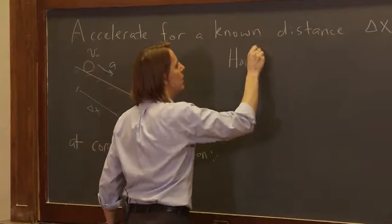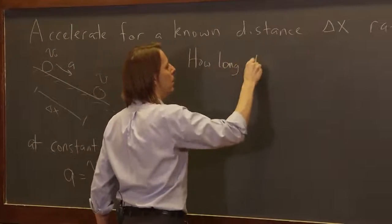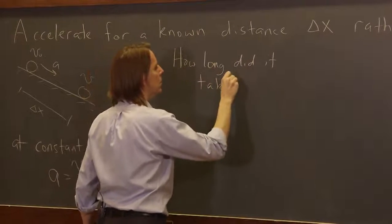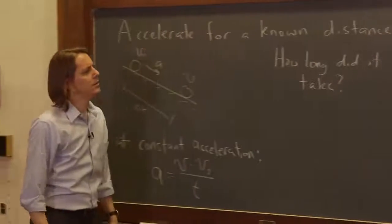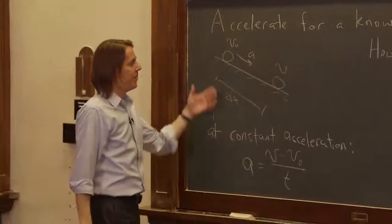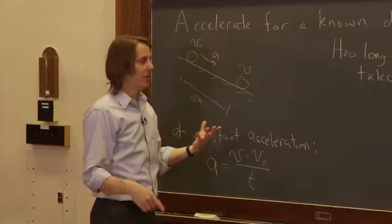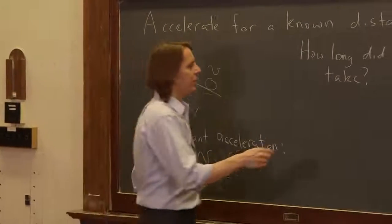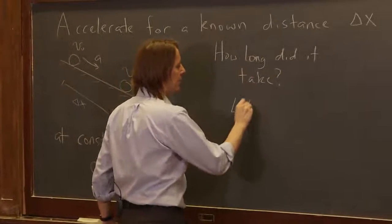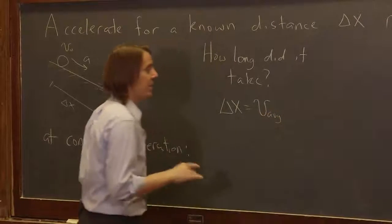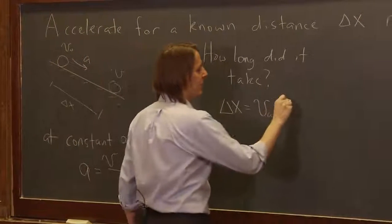So we've got to figure out, what are we going to use for t? How long did it take? Because we know that there is some average velocity. And we know that average velocity is delta x over delta t. So we could write it this way, that delta x is the velocity average times time.